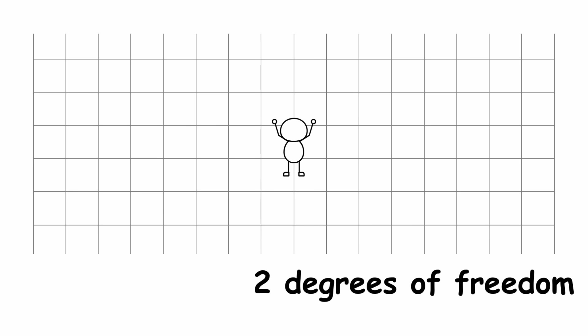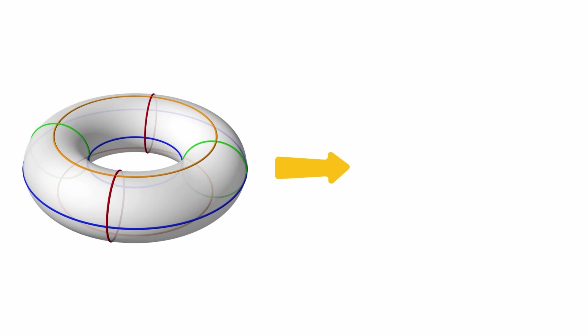This is similar to a plane, which also allows two degrees of freedom for movement. Therefore, the torus is topologically two-dimensional.